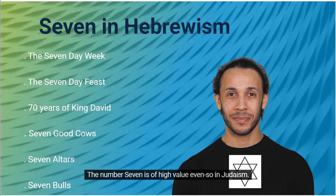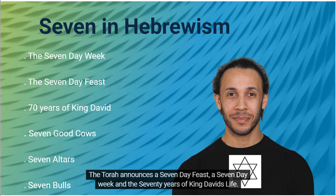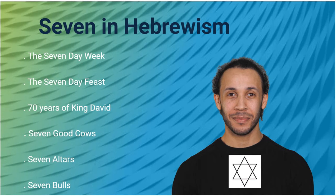The number seven is of high value even in Judaism. The Torah announces a seven-day feast, a seven-day week, and the 70 years of King David's life.